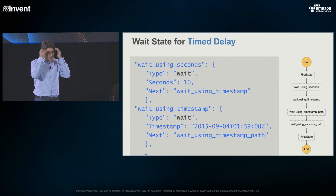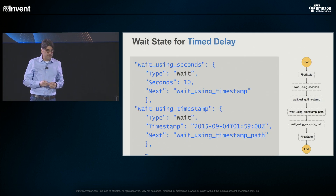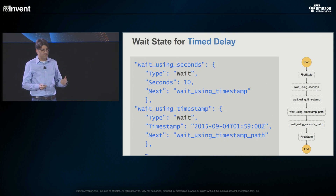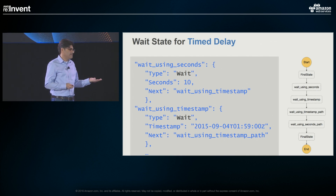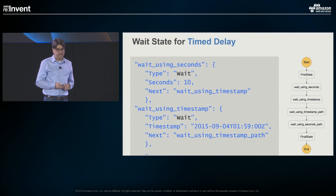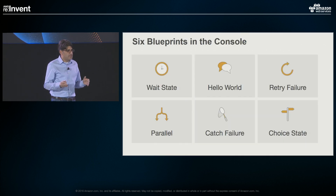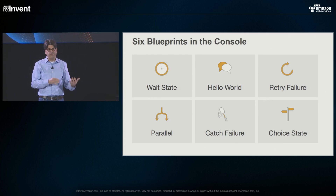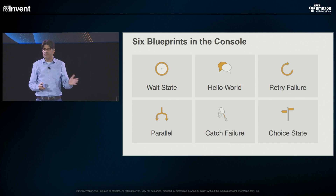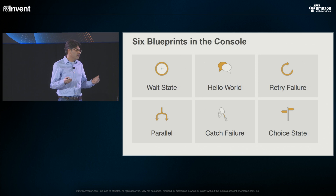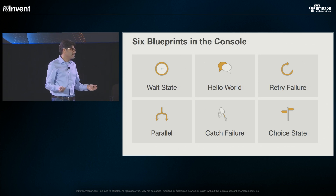Wait states are pretty straightforward — they're timers. You can have a time in seconds or a time based on a timestamp, and you can make your state machines wait. Everything I'm showing you is in the console in the blueprints. If you want to see the code in detail, modify it, and play with it, we have six blueprints today — the hello world, retry and catch, parallel states, choice states, and wait states — and we'll have more in the future.